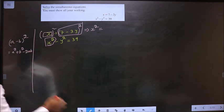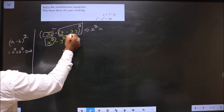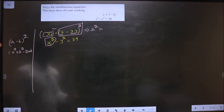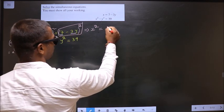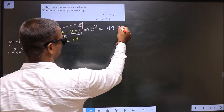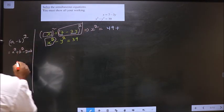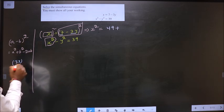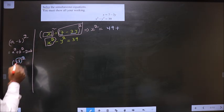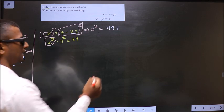In place of a, it is 7. In place of b, it is 3y. So, a square is 49 plus b square means 3y whole square. So, apply the square to each. We get 9y square.